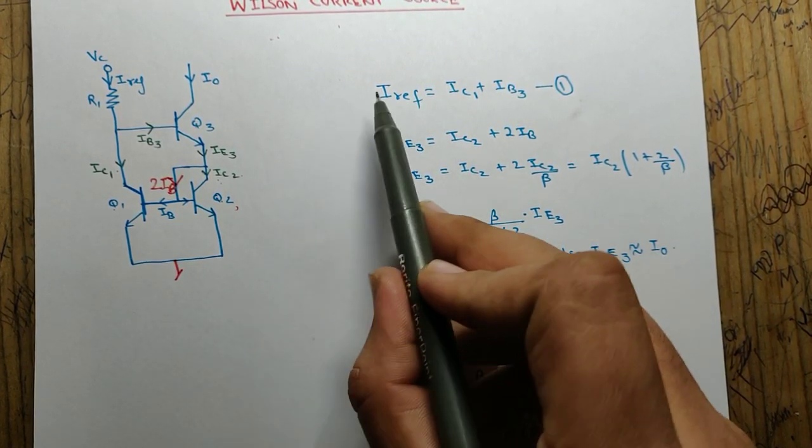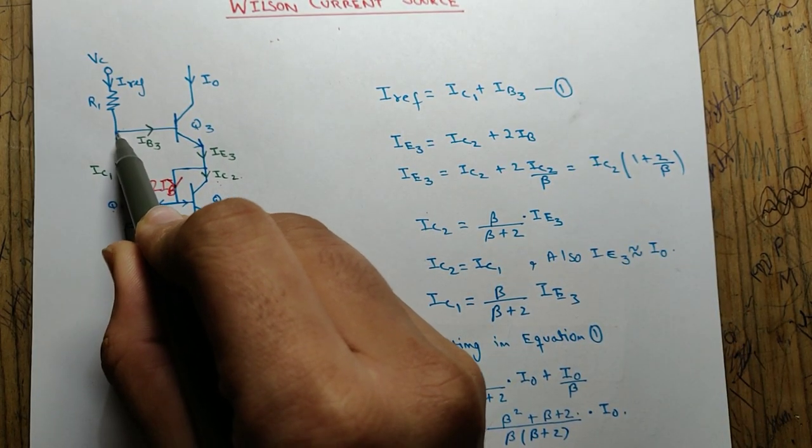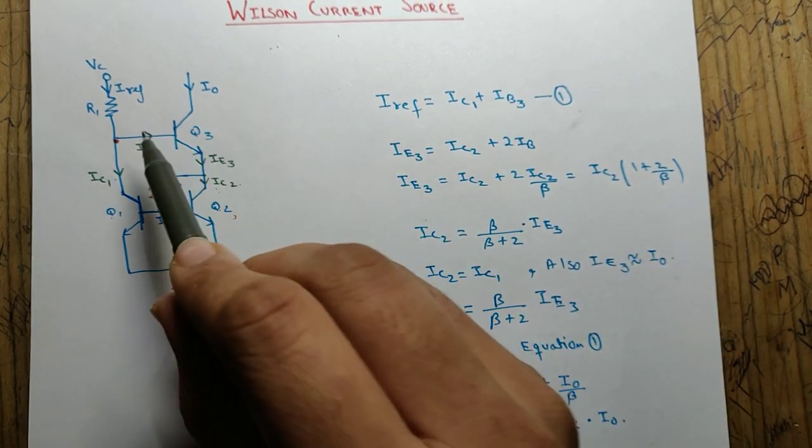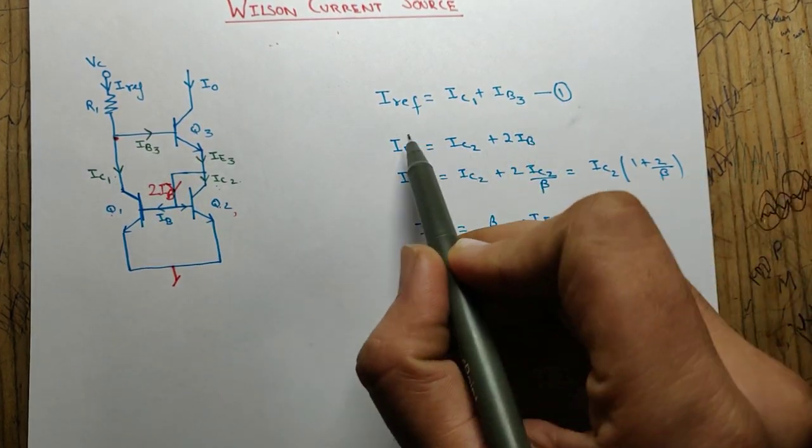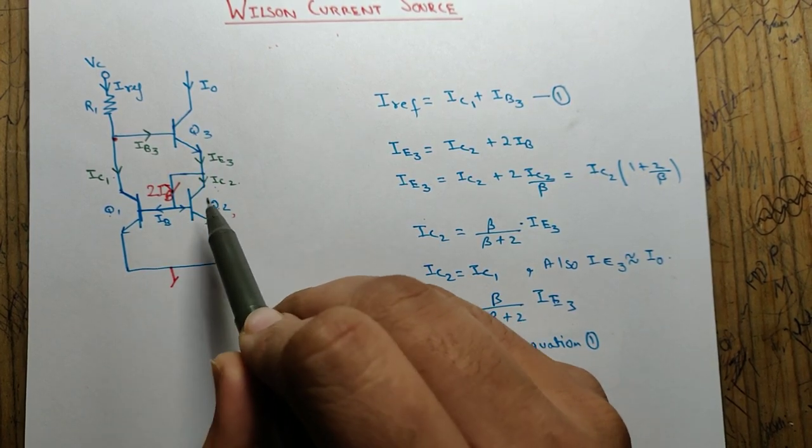I have wrote the KCL equation at this point. KCL equation, Kirchhoff Current Law. i_reference will be equal to ic1 plus ib3. Now I have wrote the KCL at this point.